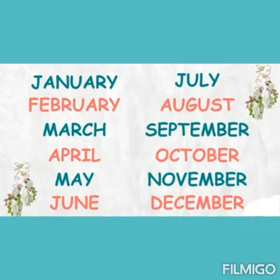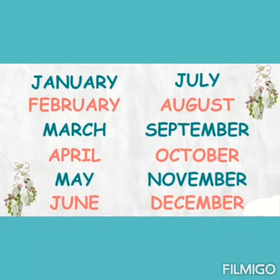Name them: January, February, March, April, May, June, July, August, September, October, November, and December. This is the sequence of 12 months.